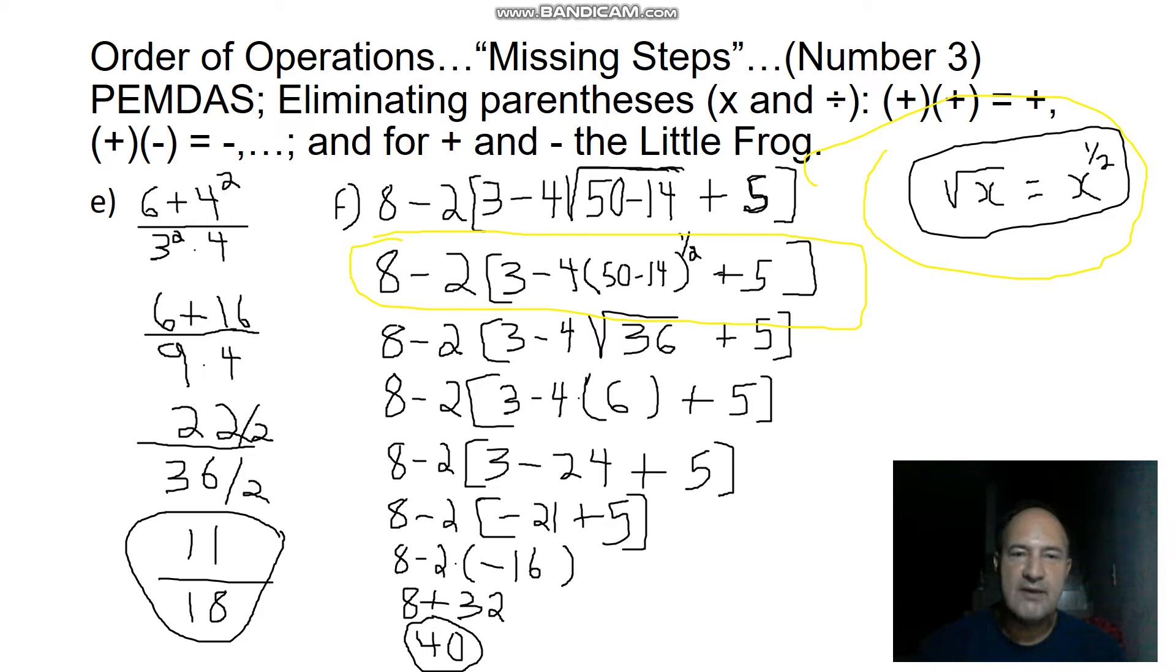We have 8 minus 2 times, because it's a big bracket, 3 minus 4 times another multiplication, square root of 50 minus 14 and separated plus 5, close the bracket. The multiplication ends when we close the bracket, but we have inside the bracket another parenthesis. The square root is a parenthesis.